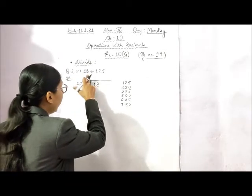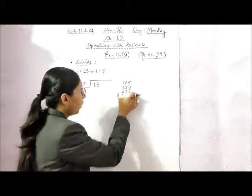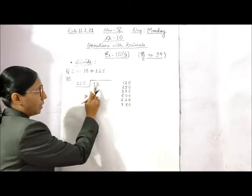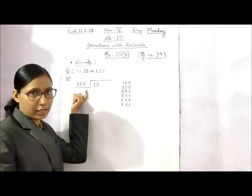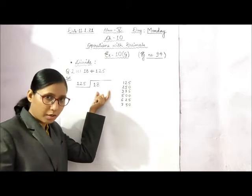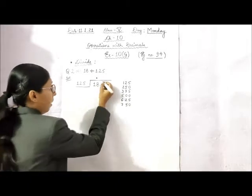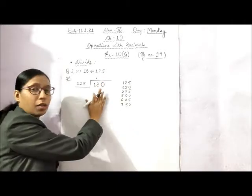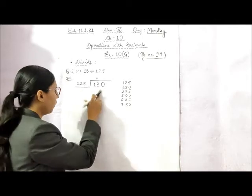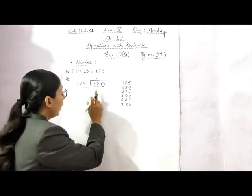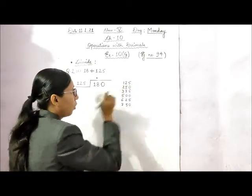Question 2 part C: 18 divided by 125. We are going to divide 18 by 125, and I have written the table of 125. This 18 cannot be divided by 125 because 18 is smaller than the divisor. So we are going to make it a larger number — put a decimal point in the quotient and write a 0 with 18. This will become 180, which is greater than 125.